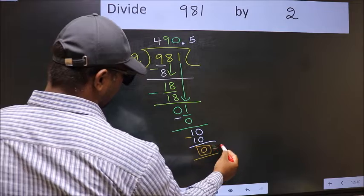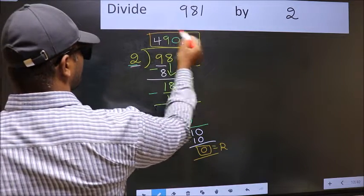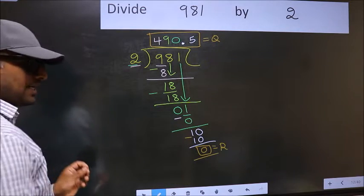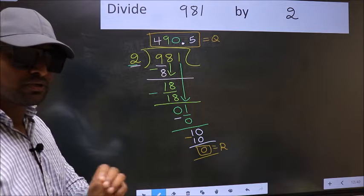So this is our remainder and this is our quotient. Did you understand where the mistake happens? You should not do that mistake.